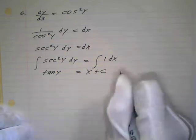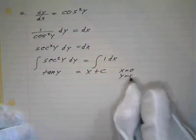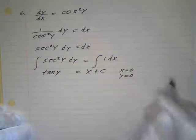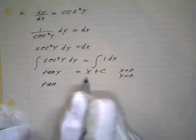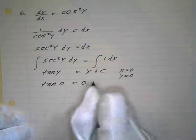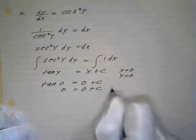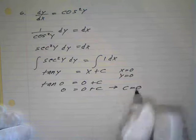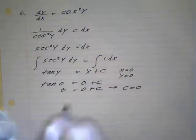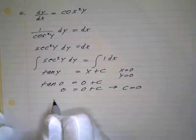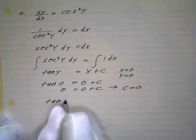We have initial conditions: when x equals zero, y equals zero. So I can put that in and find what c is. The tangent of zero equals zero plus c, and the tangent of zero is just zero, so zero equals zero plus c, which implies c equals zero.